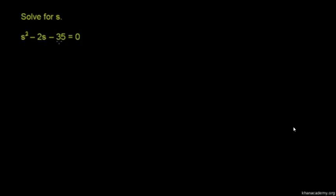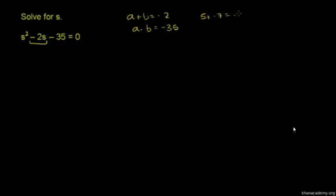How can we factor this? I'll show you the standard way we've been doing it by grouping, and then there's a shortcut when you have a 1 as a coefficient. When you factor by grouping, you think about two numbers whose sum is equal to negative 2 — so a plus b equals negative 2 — and whose product is equal to negative 35, so a times b equals negative 35. Since the product is negative, one has to be positive and one negative. So 5 and negative 7 will work: 5 plus negative 7 equals negative 2.